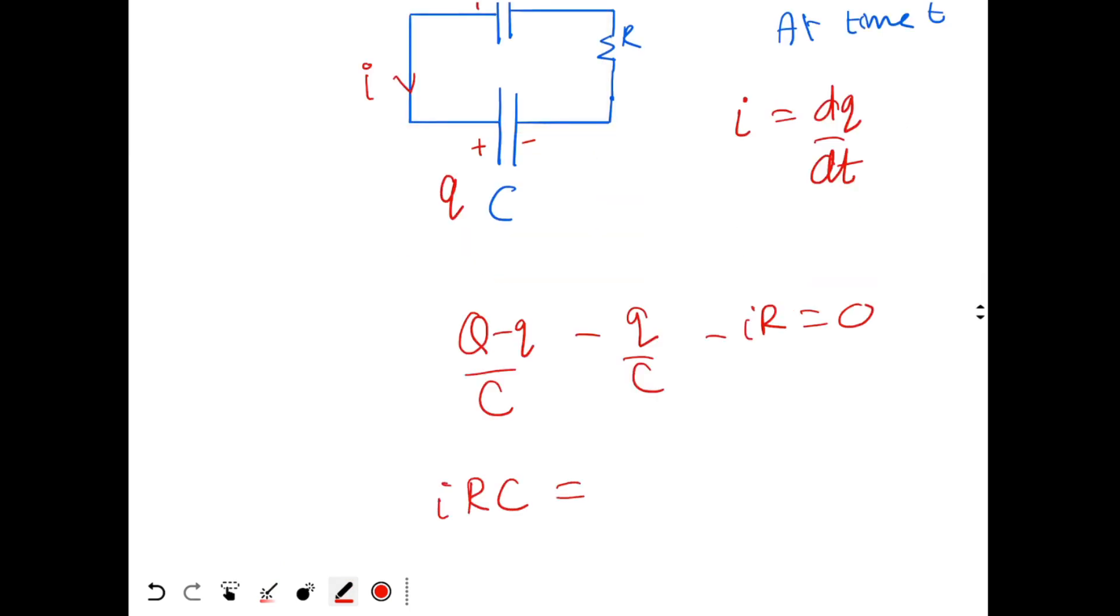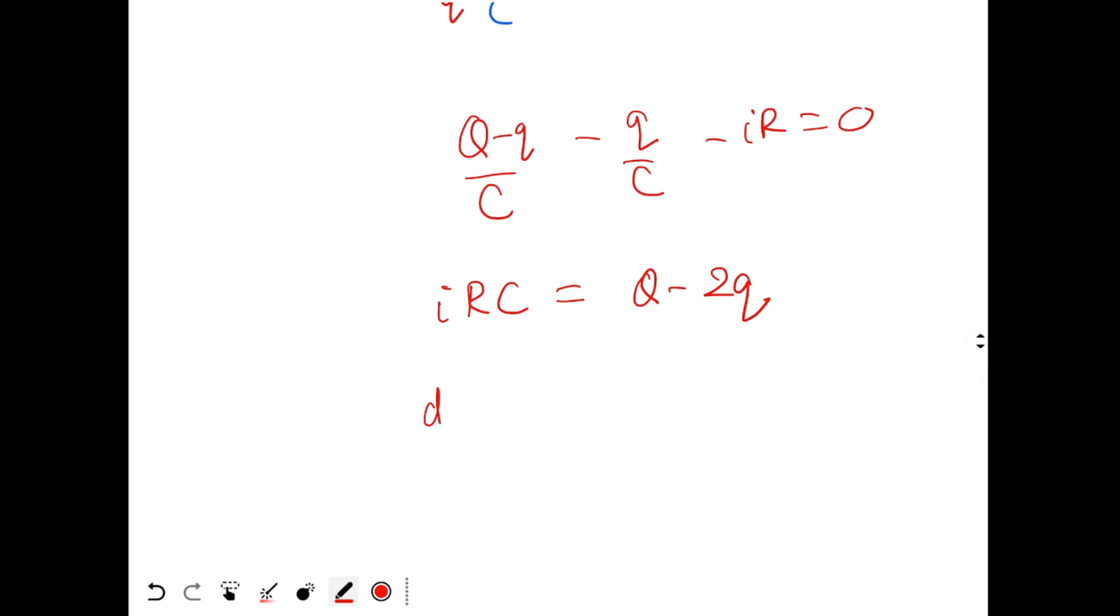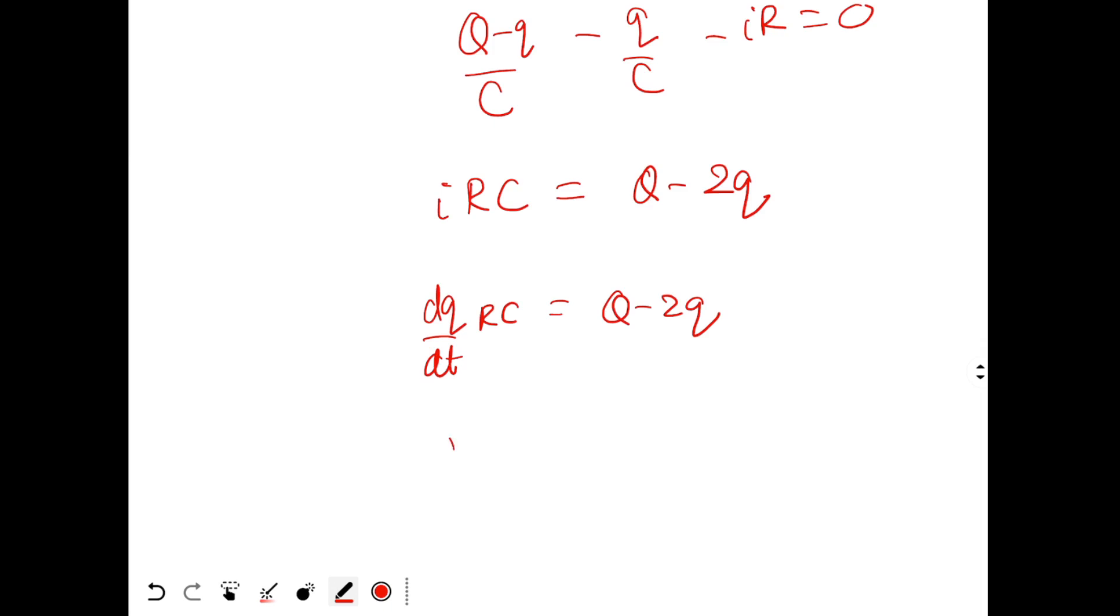So IRC is equal to Q minus 2Q. But I is equal to dQ by dt. So dQ by dt times RC equals to Q minus 2Q. Or dQ by Q minus 2Q should be equal to dT by RC.